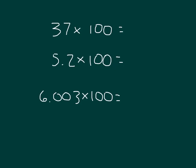A few more review problems where we're multiplying by 100. 37 times 100 is 37 hundreds, or we write that as 3,700. For 5.2 times 100, moving the decimal point two times shifts the digits two places to the left, so 5.2 times 100 is 520.